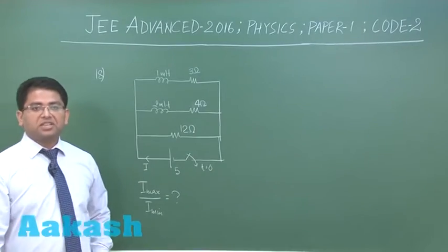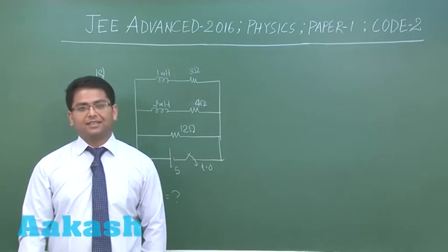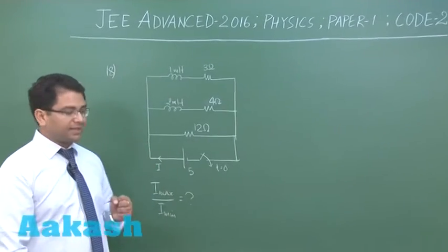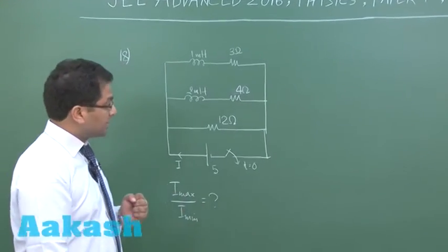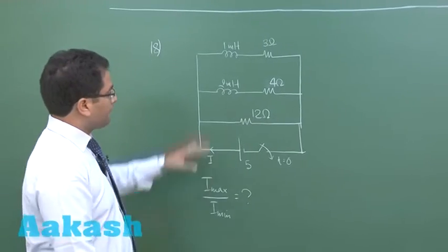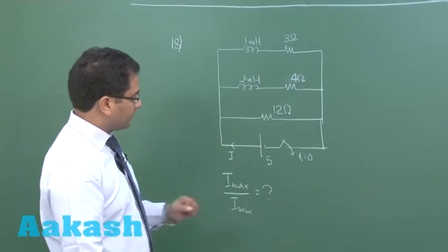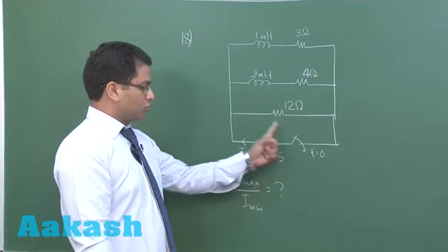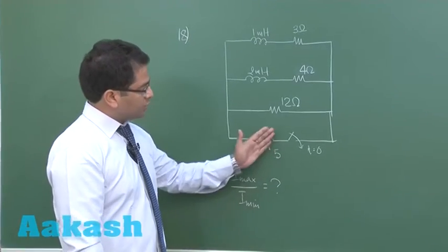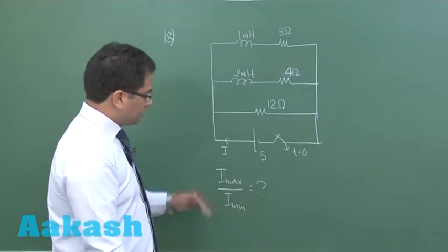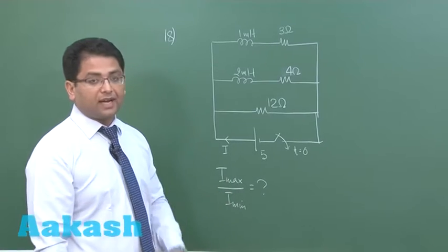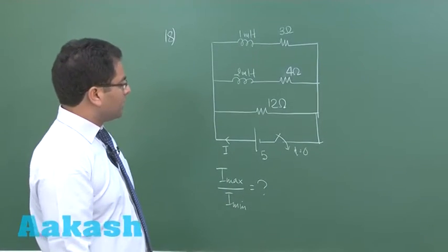Alright, the final question, question number 18, is from electromagnetic induction, a question pertaining to RL circuit. All the data are very clearly given. I is the current that is drawn from the battery and the switch is closed at t equals zero. We need to calculate the ratio of i_max to i_min.